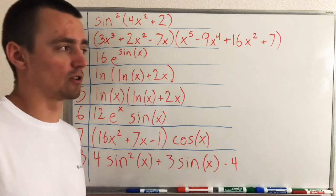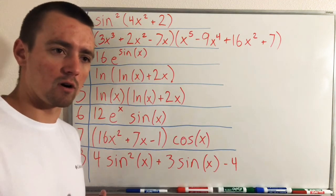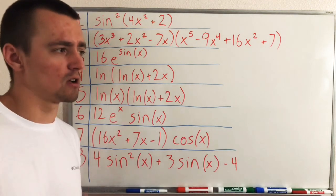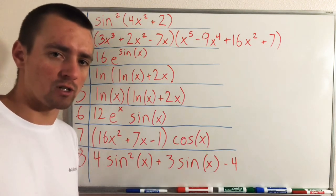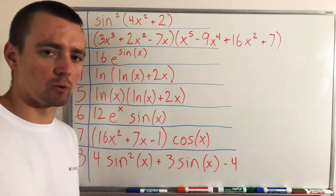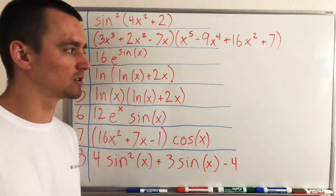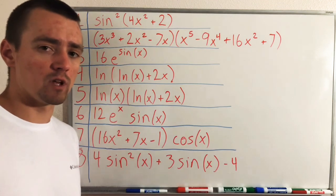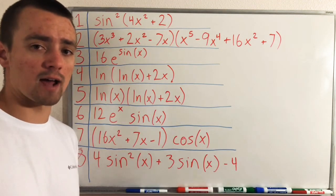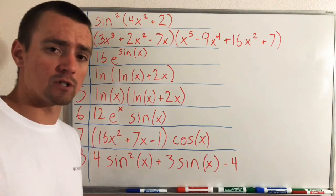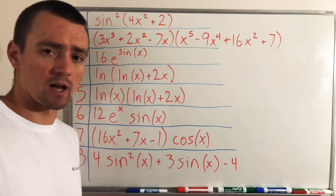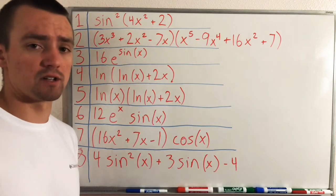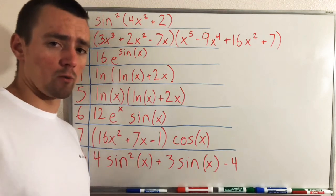Quotient rule is often a lot more easily determined because it's only usable when you have two functions in a fraction. If you don't have an obvious quotient or fraction, it's pretty easy to eliminate that one, but product rule versus chain rule is a harder decision. So I want to go over some examples of how to choose between the two rules, and then throughout the rest of the week I'll be posting videos about actually applying these rules. Let's go through these eight examples and determine what we'd use to find the derivative.